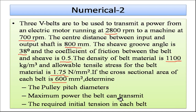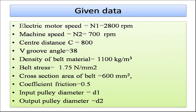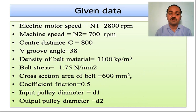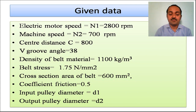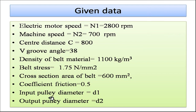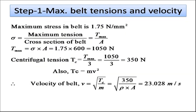The density of belt material is 1100 kg/m³, the reliable tensile stress is 1.75 N/mm², and the cross-sectional area of the belt is 600 mm². We need to find: the diameter of the pulleys, the maximum power each belt can transmit, and the required initial tension in each belt. First, we calculate the maximum tension: T_max = stress × area = 1.75 × 600 = 1050 N.